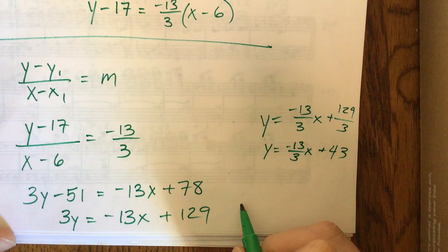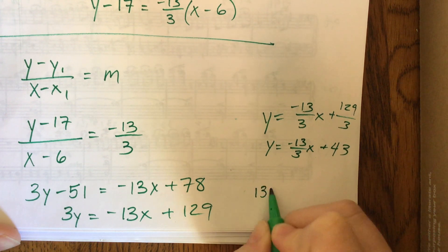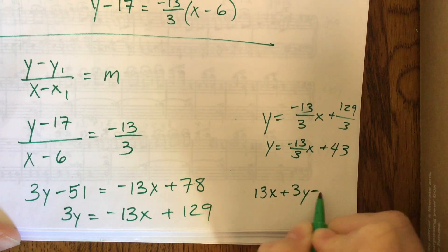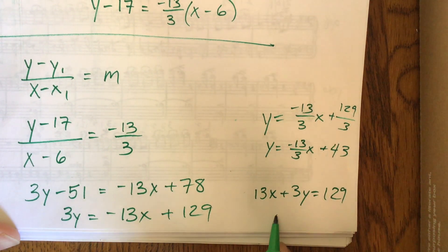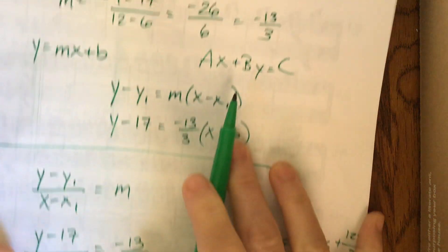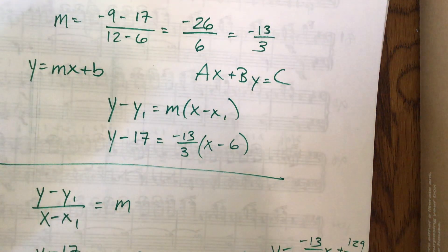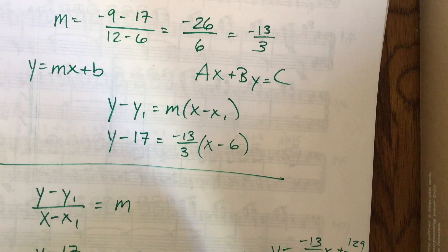The other option is to move this to the other side. And so then I have this 13x plus 3y equals 129. And that's, that form ax plus by equals c. So that's, you just need to practice a few, because you should already be really comfortable with this.